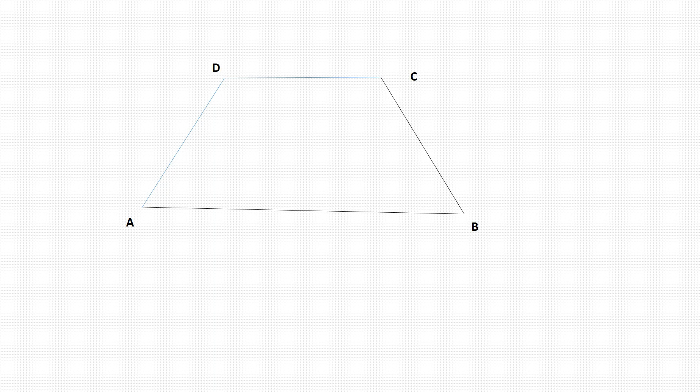In this quadrilateral we have two diagonals intersecting at the point M. Now we're also given that angle DAC is 35 degrees. We're also given that angle BAC, B for boy, is 20 degrees. And we're also given that the angle DCB is 130 degrees.